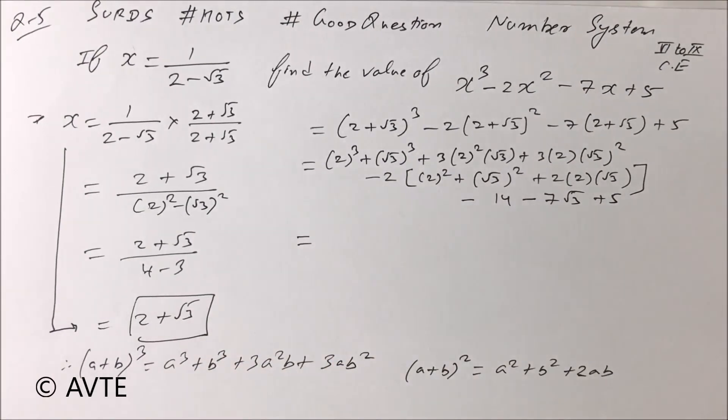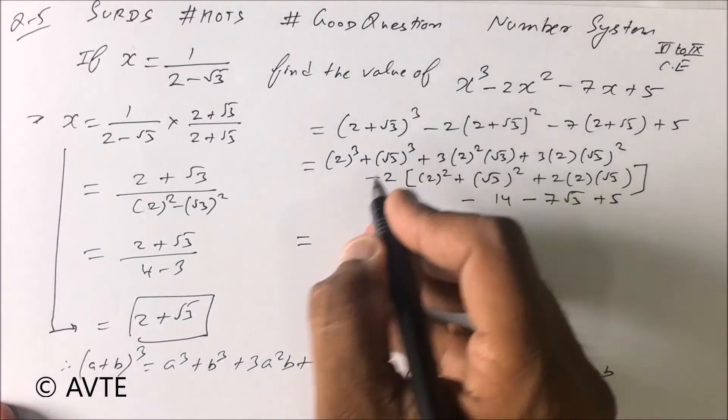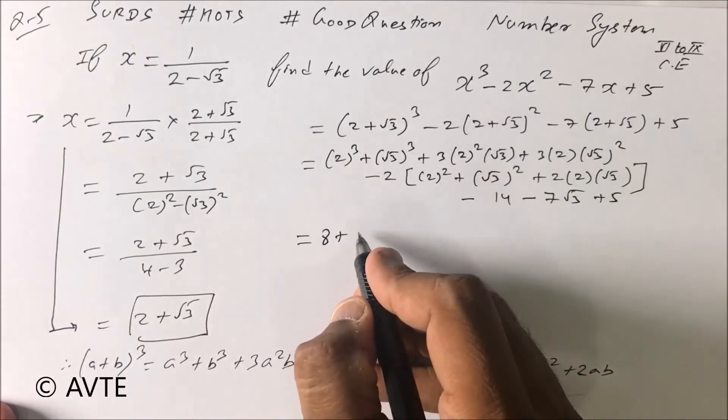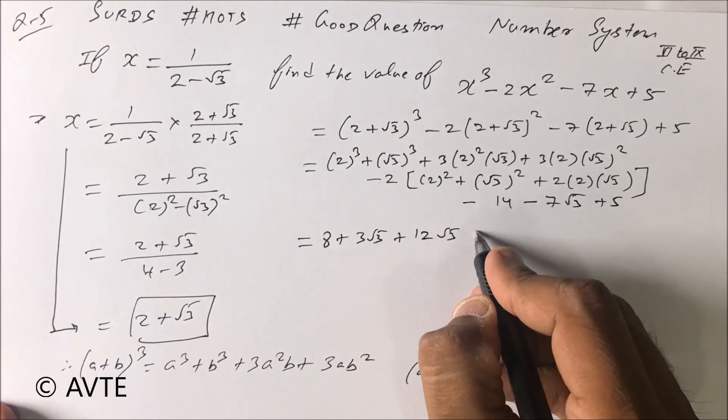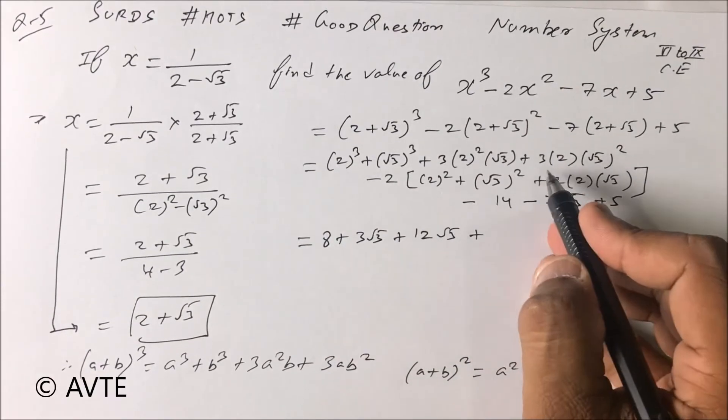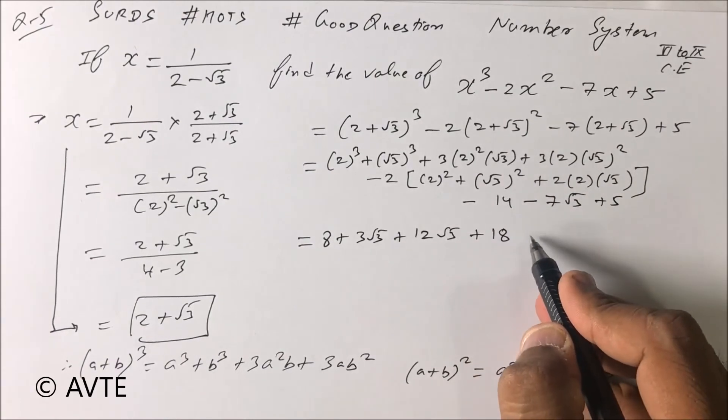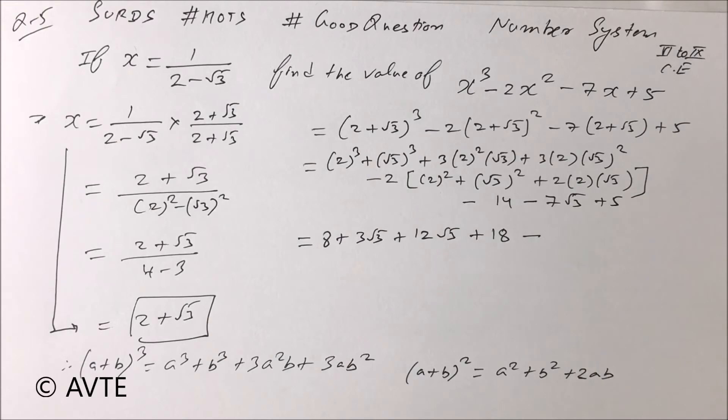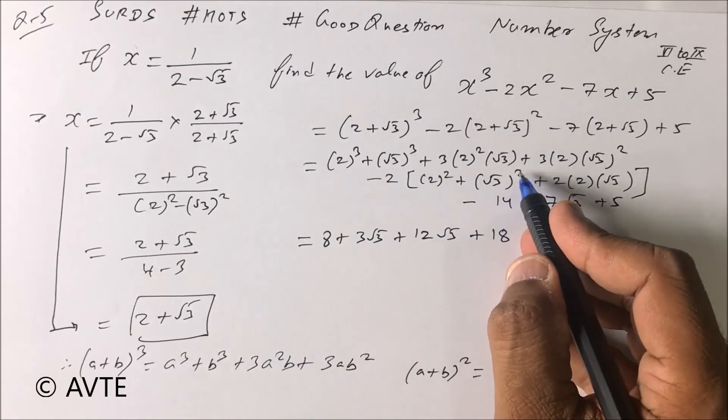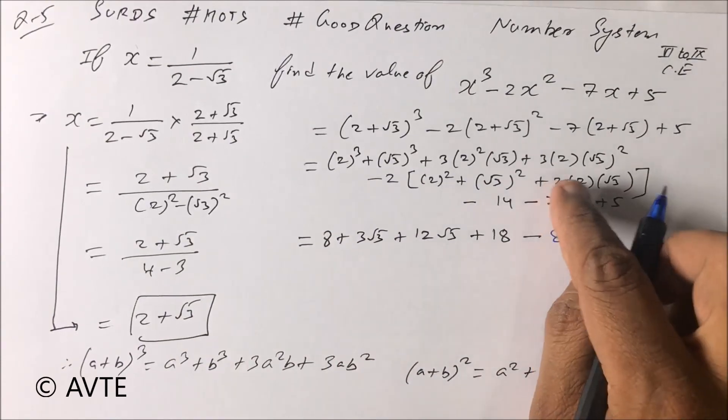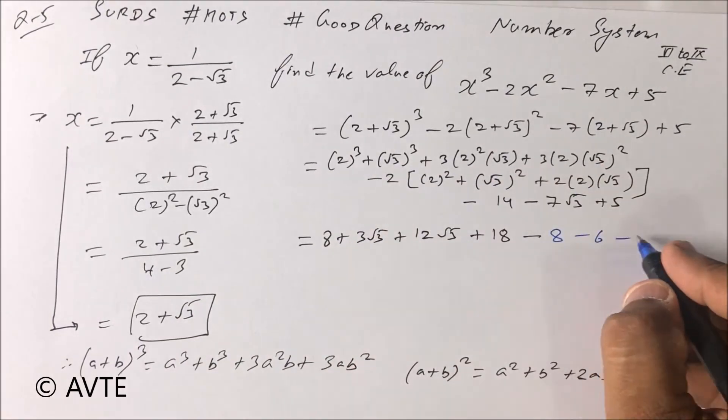So guys, now we just evaluate. We must know that root a into root a is a. 2³ is 8, here it is 3 root 3, plus 4 into 3 is 12 root 3, plus root 3 square is 3 into 3 - 9 - 18. Minus, now 2² is 4, 4 into 2 is minus 8, root 3 square is 3, 3 into 2 is minus 6, and 2 into 2 is 4, 4 root 3, 4 root 3 into 2 is minus 8 root 3.